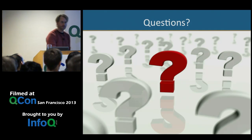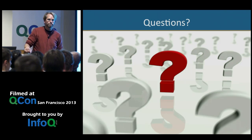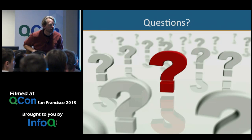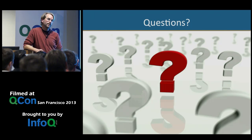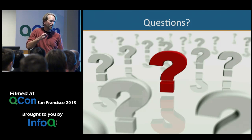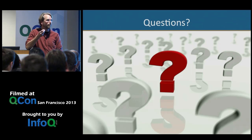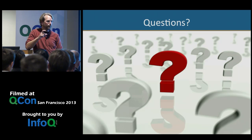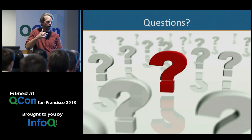I'll open it up for questions. For real-time event processing, it really depends on how you want to process events. For simple event processing — an event comes in and you want to compare a value to a threshold and set off an alert — you can do a lot of that in hardware now. You can do it in an FPGA and crank wire-speed 10-gigabit events through that.